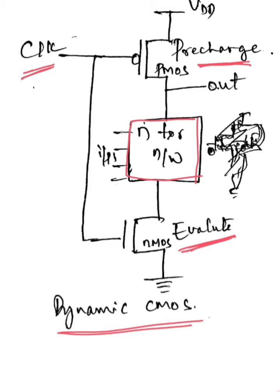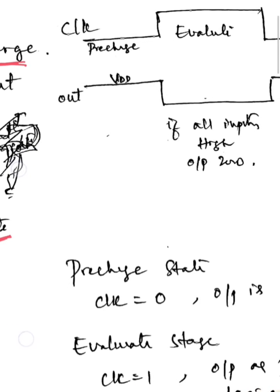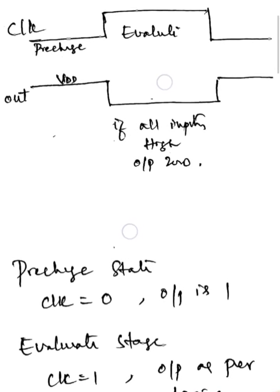Now we will see how this circuit is going to behave when we provide the clock signal. Here you can observe the timing diagram.